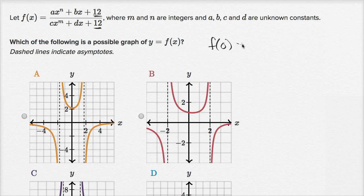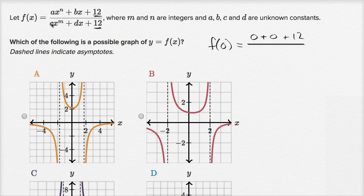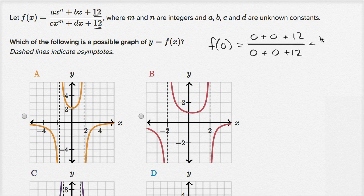F of zero is going to be equal to a times zero to the n, well that's just going to be zero, plus b times zero, well that's just going to be zero, plus 12 over c times zero to the m power, well that's just going to be zero, d times zero is going to be zero, and then we have our 12 there. So we're actually able to figure out what f of zero is. It's 12 over 12 or one.